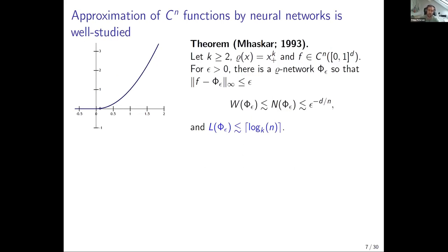If you're solving PDEs in the classical sense, differentiable functions are of interest. This is a very old result: if a function is n times continuously differentiable and the activation function is something like a higher-order ReLU, then I can approximate it with networks. I know the number of weights and neurons needed to approximate with error epsilon in the uniform norm, and it scales as epsilon to the minus d over n — which is optimal and the same rate you'd get with free-knot splines.